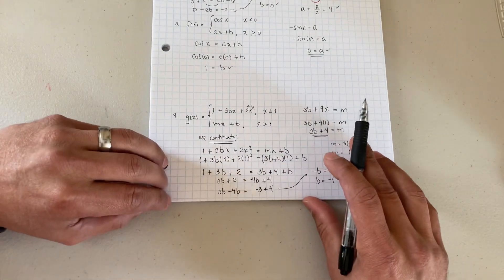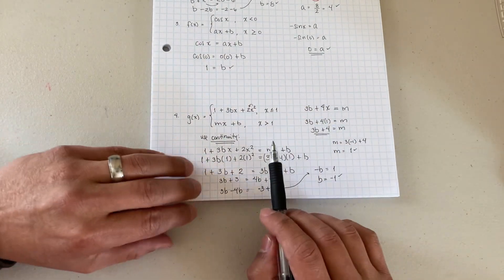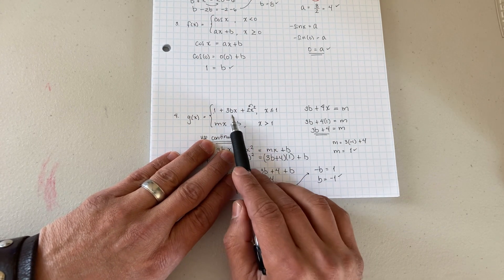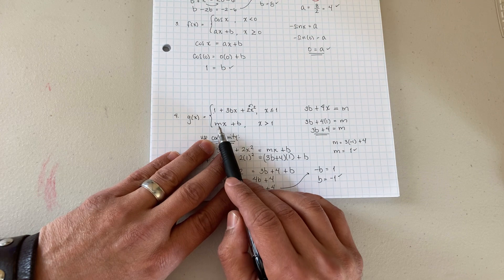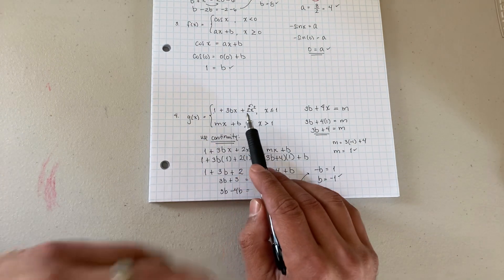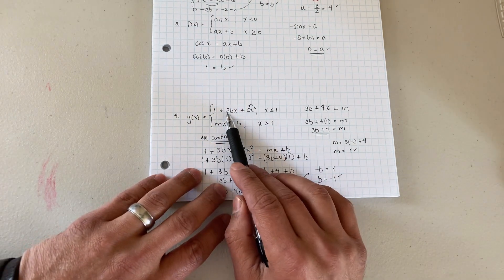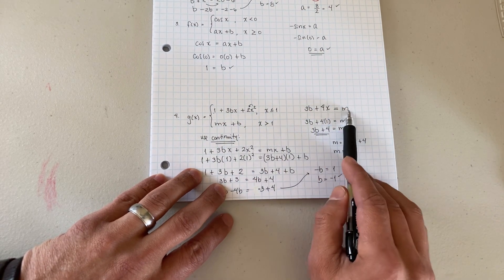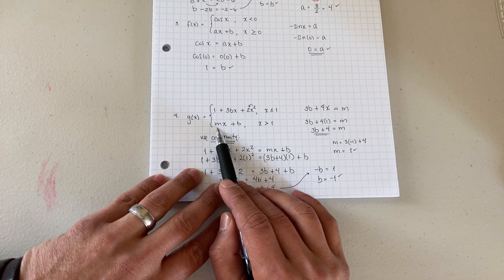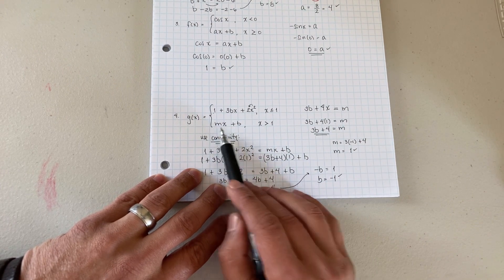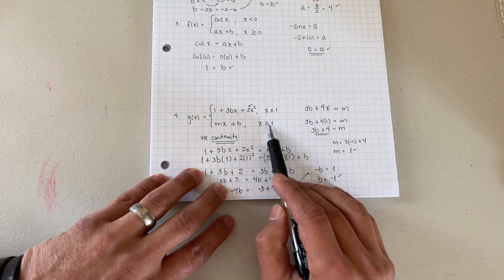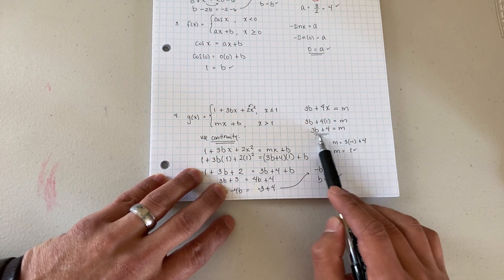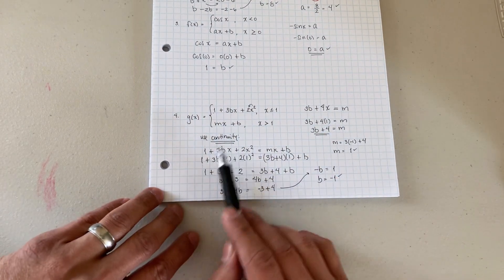Last one here. Same thing, we take the derivative of this guy here. Now remember these a and b values, they're constant, they're numbers, so don't let that trick you. So over here we have 3b plus 4x equals, and remember this is a constant, mx, the derivative would just be m. We plug in our 1, we get 3b plus 4 equal to m. We still have two unknowns. So what do we do now? We go back and use continuity.